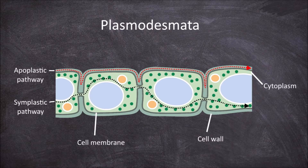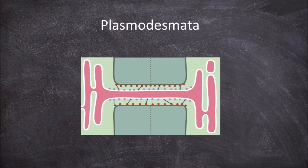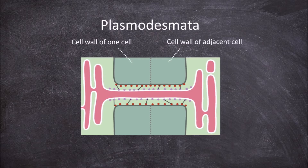A single plasmodesma consists of a tubular gap in the cell wall of two adjacent cells. The two adjacent cells are separated around the plasmodesmata by their respective cell walls and a middle lamella.